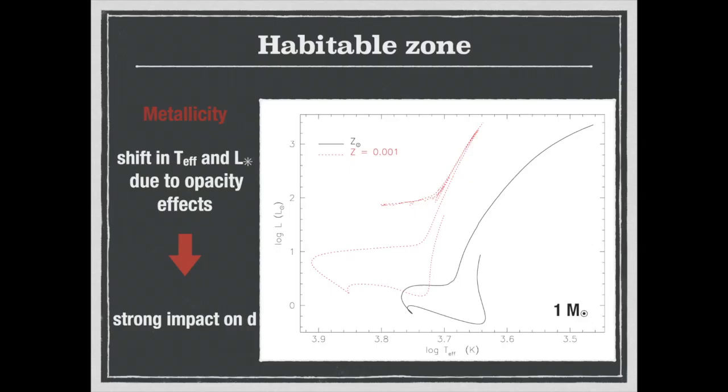And finally, the metallicity induced a shift in both effective temperatures and luminosity due to opacity effects. And here, the luminosity and effective temperatures increased for decreasing metallicity. So again, this will have a strong impact on the habitable zone limit.